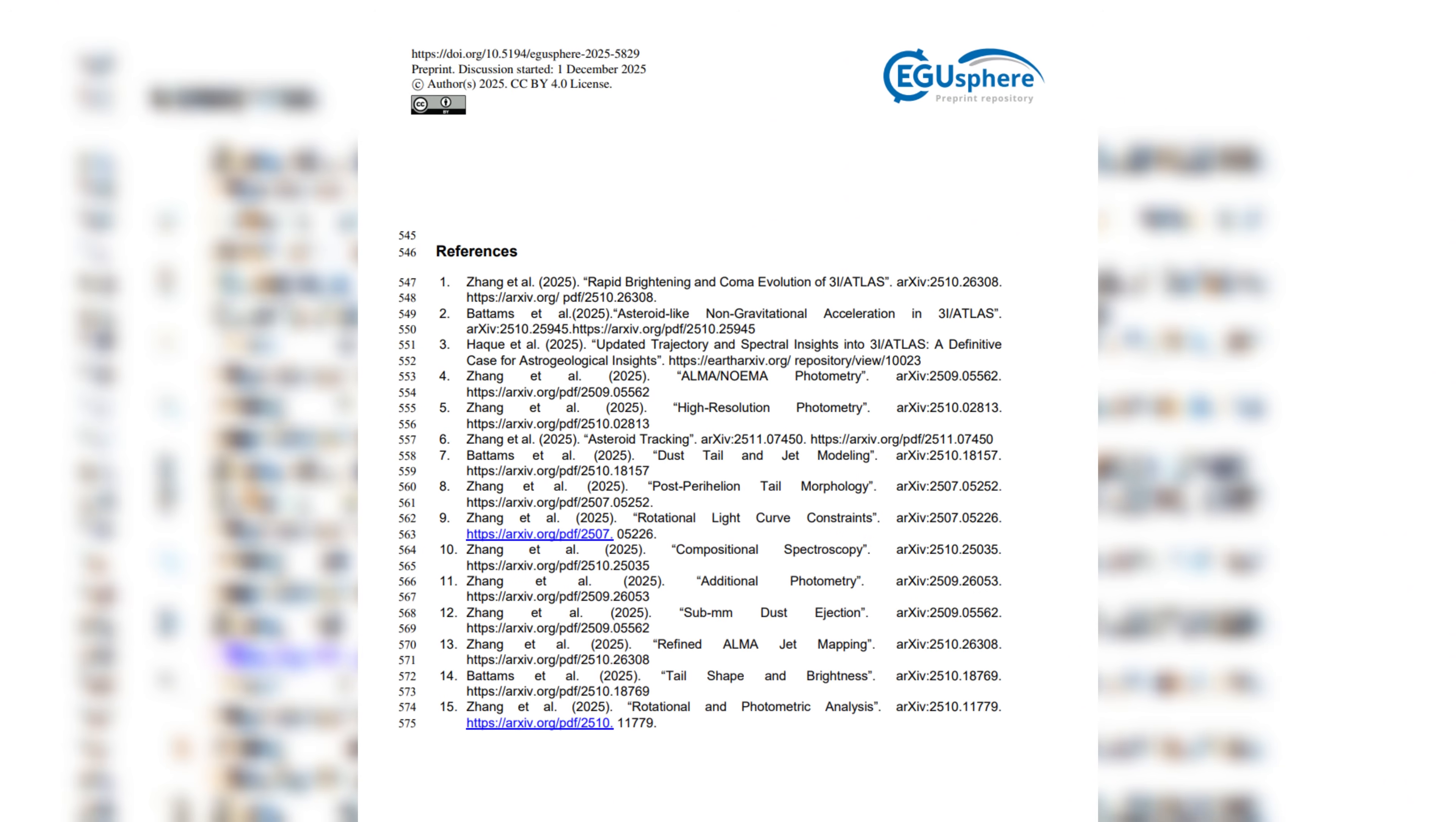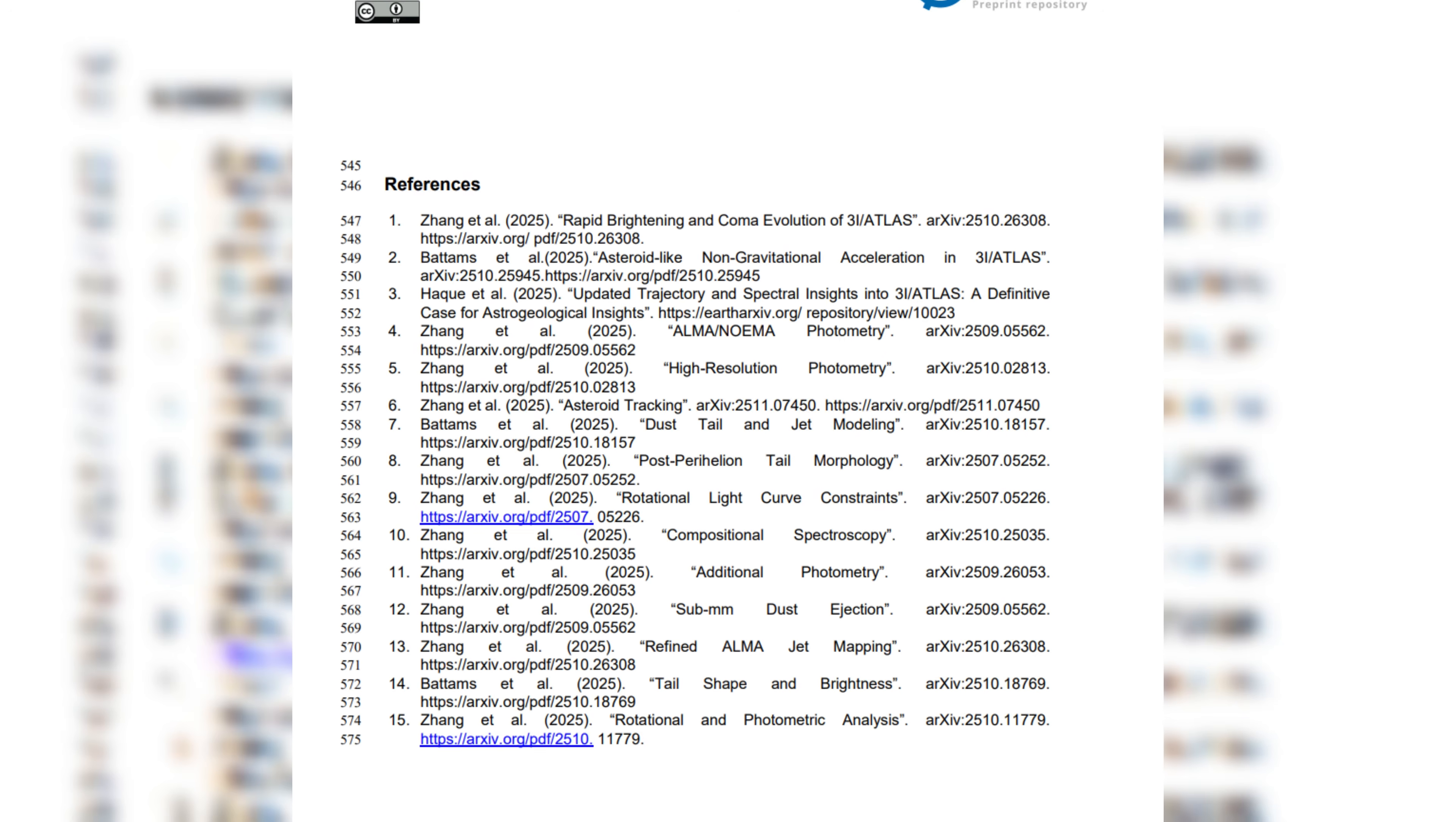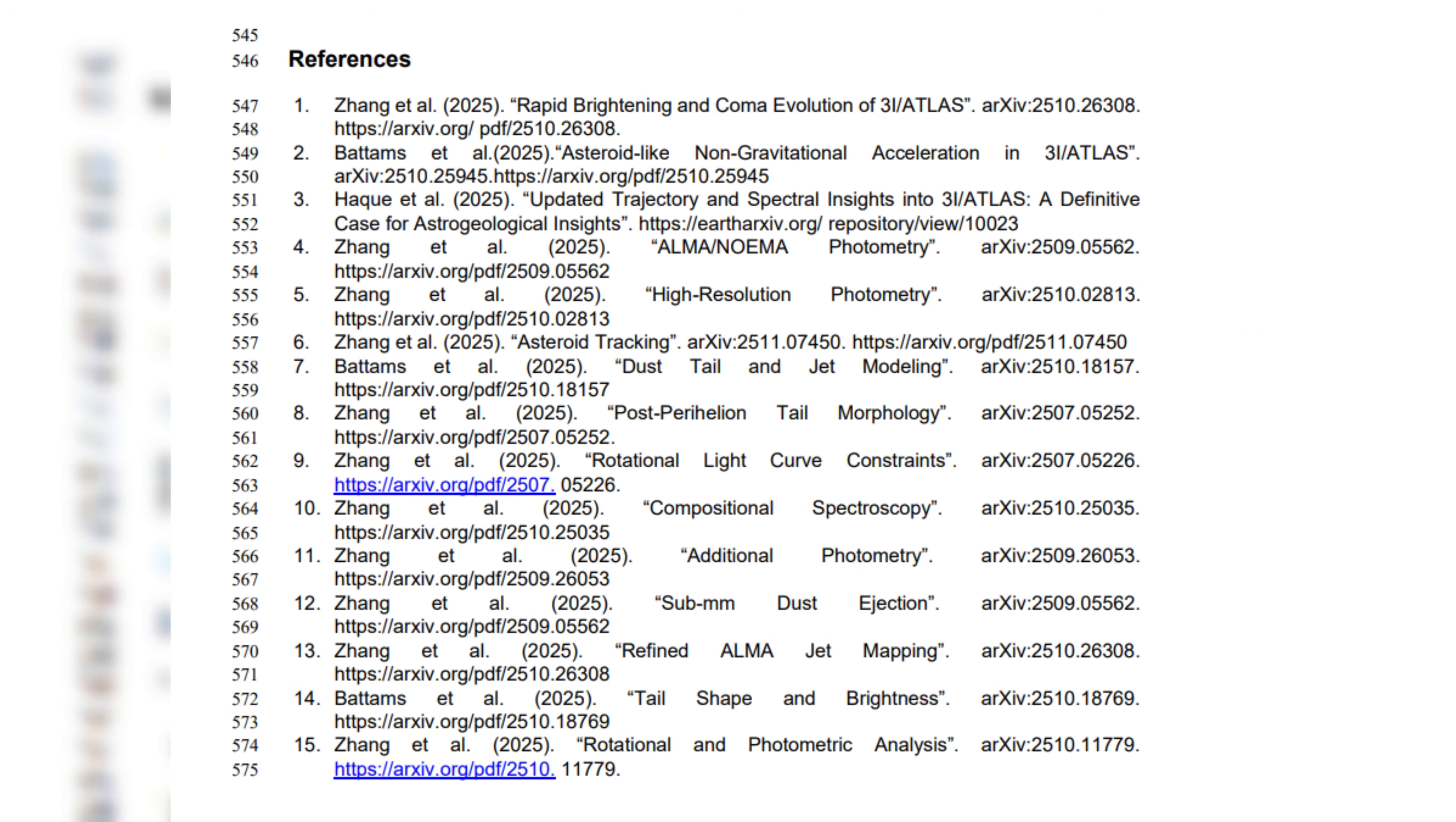Yet the list of unexplained features grows: a directional anti-tail unaffected by solar wind pressure, a coma oriented the wrong way, a swarm-like distribution of macroscopic objects, extreme chemical ratios, and non-gravitational acceleration that matches predictive modeling.